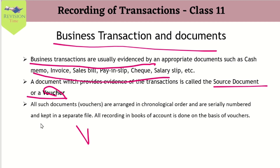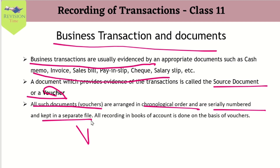A document which provides evidence of transactions is called a source document or voucher. All such documents or vouchers are arranged in chronological order, are serially numbered, and are kept in a separate file. All recording in books of accounts is done on the basis of vouchers. Every bill has a date and bill number — chronological order means date-wise, and serially numbered means each bill has a sequential number. According to these vouchers, the recording of transactions in our journal or posting in ledger is done.